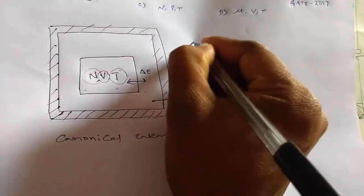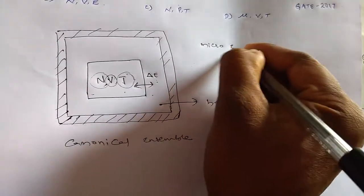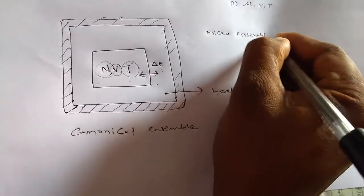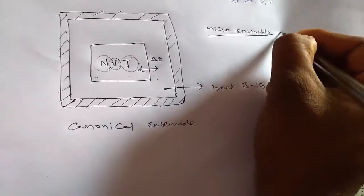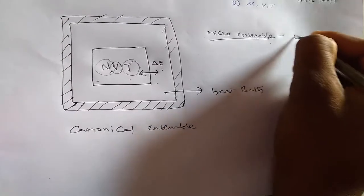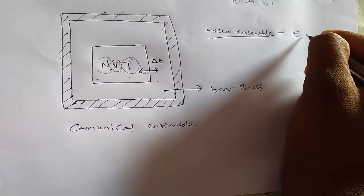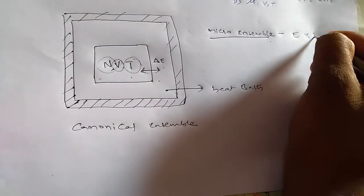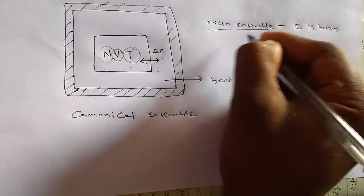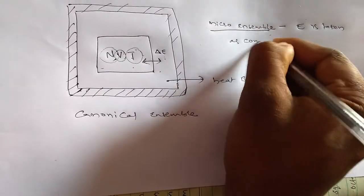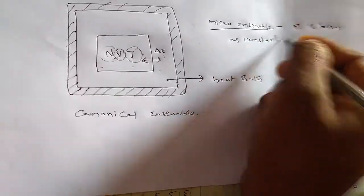Extra information: In microcanonical ensemble, energy is taken as constant.